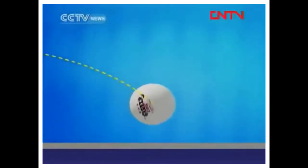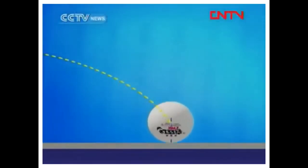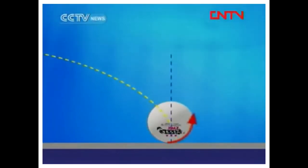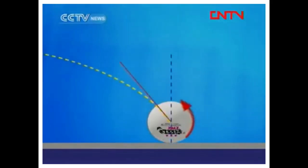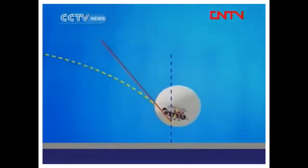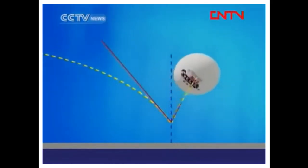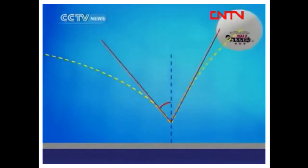By contrast, a backspin ball landing on the table gets backward acceleration from the spin, demonstrating weak momentum when bouncing, and its angle of reflection is narrower than that of the incidence.